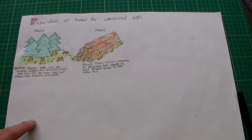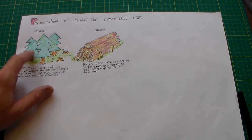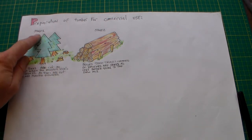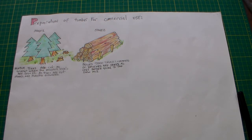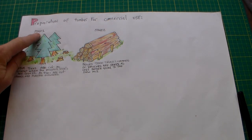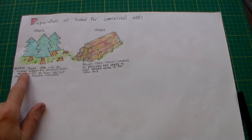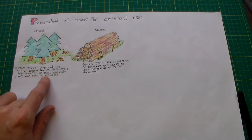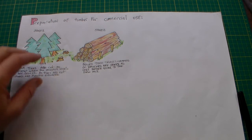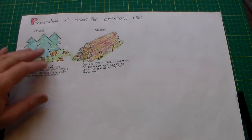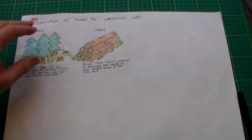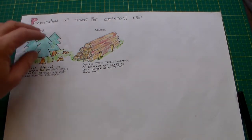We're looking at this process, and I've got a sheet here where I've broken this process down into five stages. Stage one: mature trees are cut in winter when the moisture levels are lowest. The trees are cut and others are planted elsewhere — this is about managed forestry, basically the trees are selected and cut.